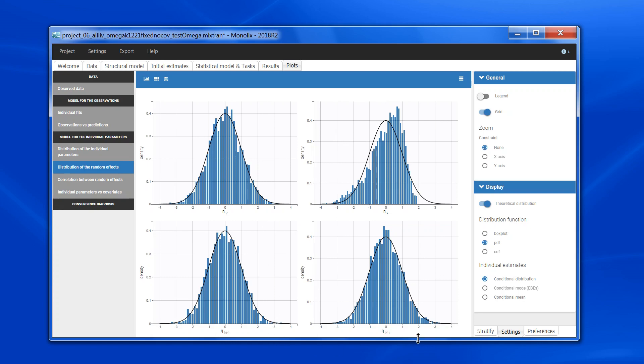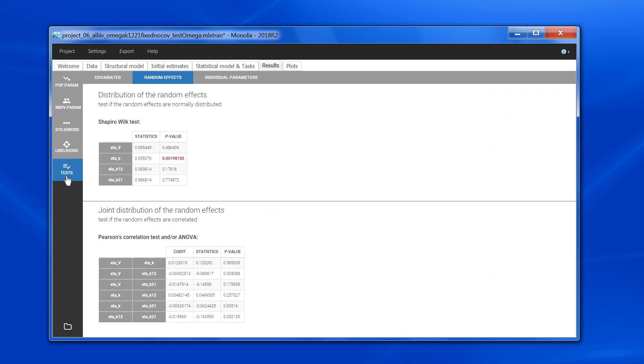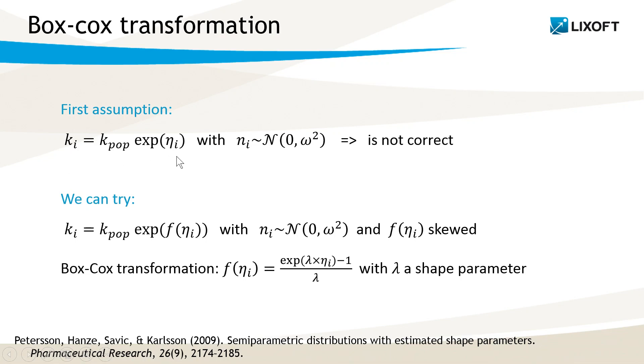For V, K12, and K21, the empirical distribution matches with the model assumption of normally distributed random effects. However, for K, it looks like the individual etas do not follow a normal distribution. This can be verified using a Shapiro-Wilk test. This test is done automatically in Monolix, in test random effects. Here the small p-value, highlighted in red, indicates that the empirical distribution of the random effects significantly deviates from a normal distribution. So this means that assuming a log-normal distribution with this expression here and the etas following a normal distribution is not correct.